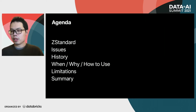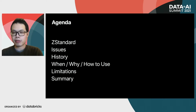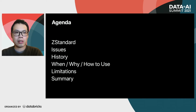In this talk, we are trying to give the audience an overview of Zstandard in the Spark ecosystem, from both the perspective of a Spark developer and the user. Here's the agenda. We will start with an introduction to Zstandard, then Dongjun will talk about the issues of Zstandard with Spark integration and its history. Then I will talk about how to use the compression codec and in what scenarios it will best help you improve efficiency. Then Dongjun will cover the limitations and end with a summary.